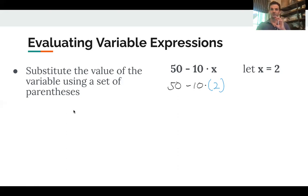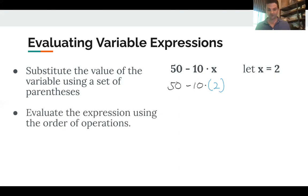The next one is we evaluate the expression using the order of operations. Well this is easy, I've already done this. 10 times 2 is 20, write the rest of the expression, and 50 minus 20 is 30.